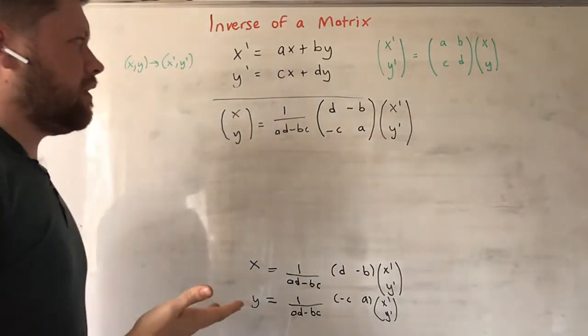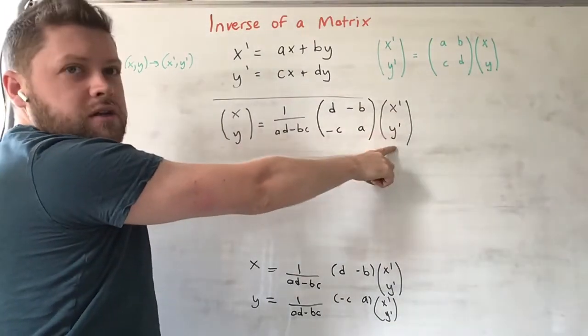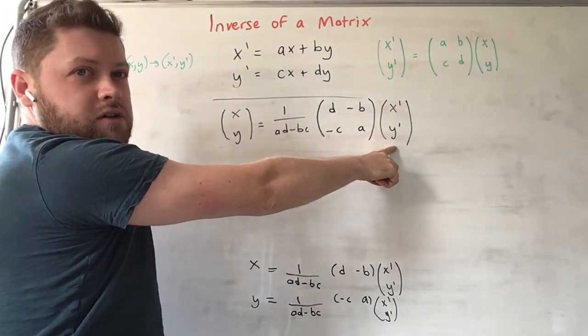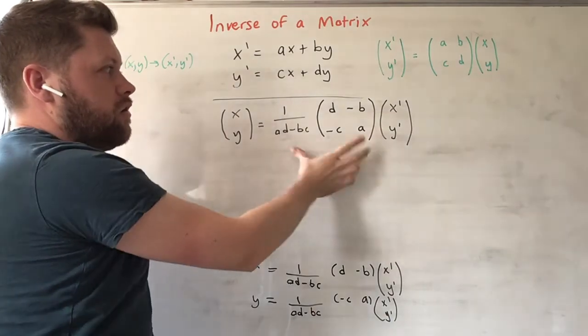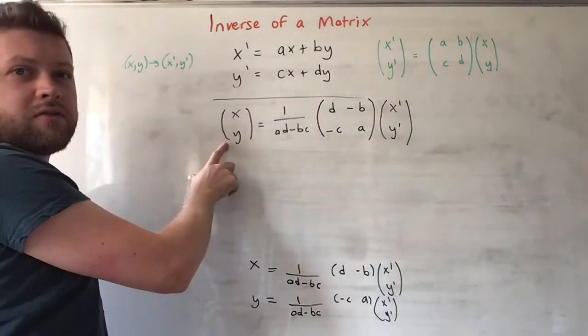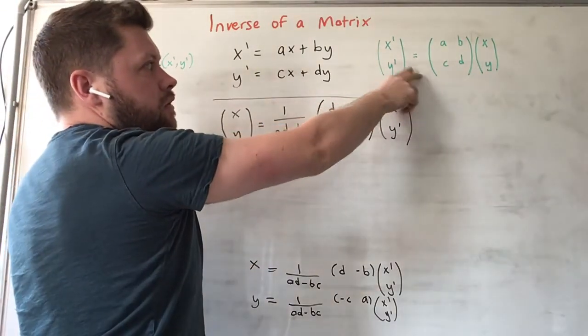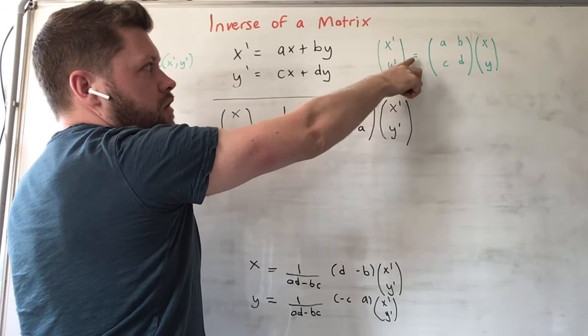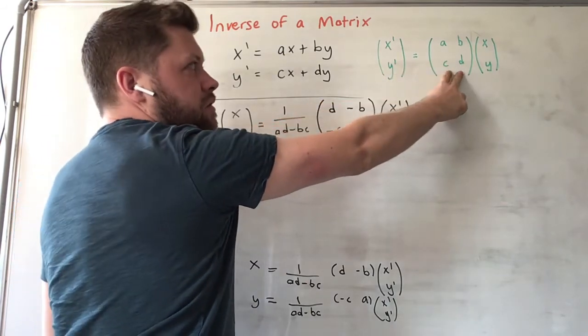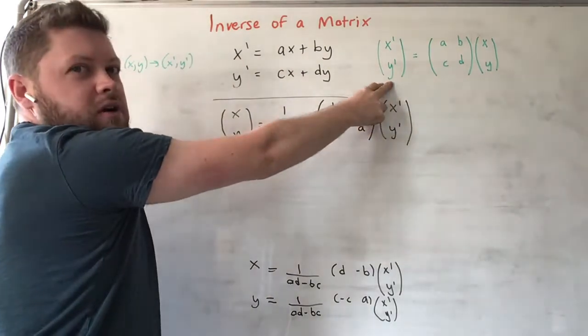What this says, if you compare it with this one, is that given x', y', whatever coordinates they are, you can use this transformation matrix to find the original x, y. That's the opposite of this one here. So in this one you have a transformation matrix (a, b; c, d) acting on x, y to give you x', y'. This is the opposite.